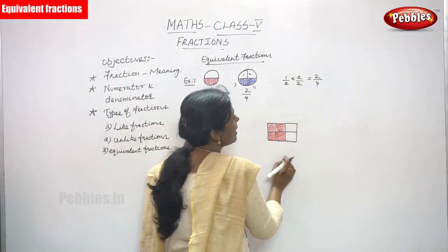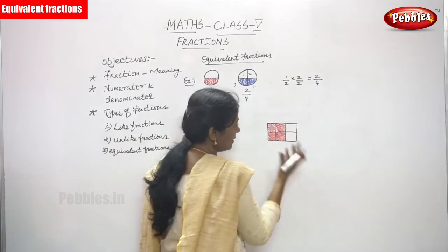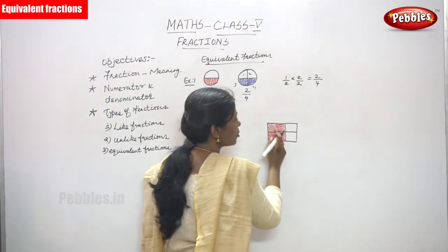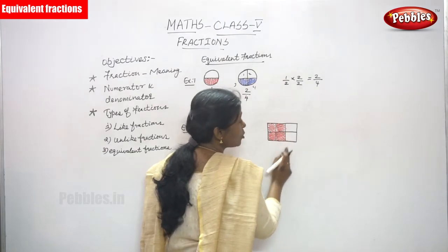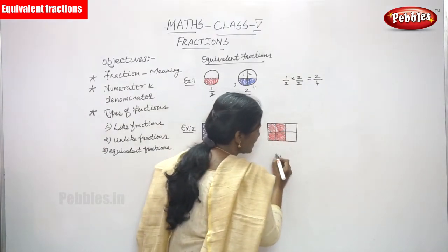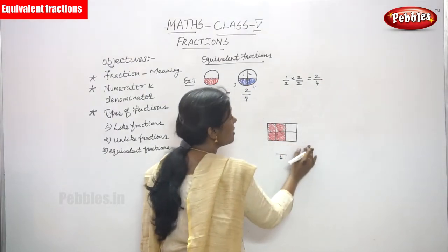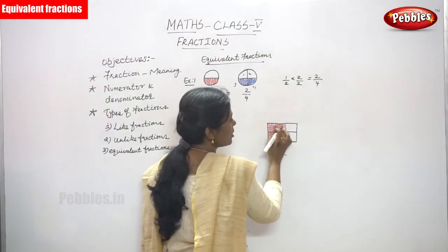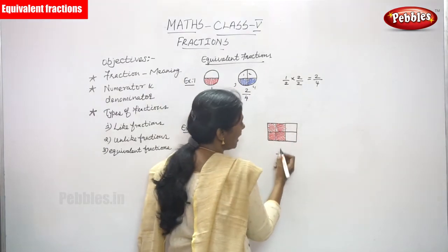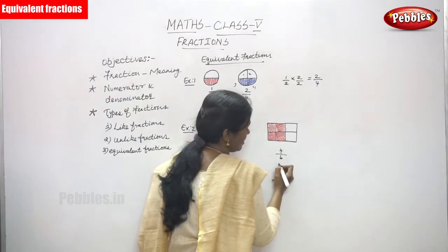Next diagram: I draw the rectangle and cut it into 6 equal parts — 1, 2, 3, 4, 5, 6. So the total number of parts is 6. After that I shaded 4 portions. The shaded portions are 4, so the fraction is 4 by 6.